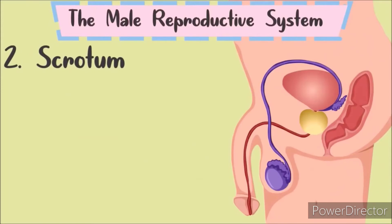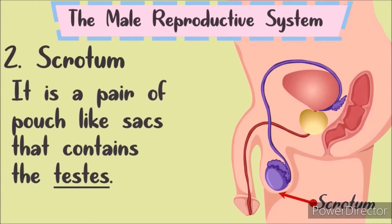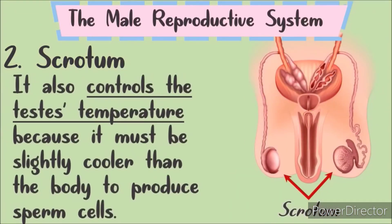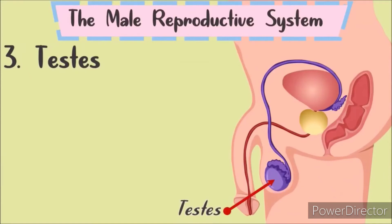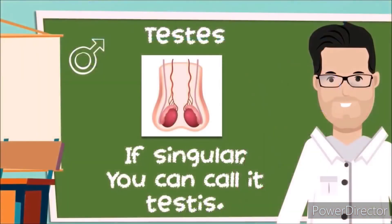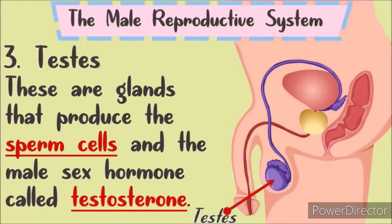Number 2: The Scrotum. It is a pouch-like sac that contains the testes. It also controls the testes' temperature because the testes must be slightly cooler than the body to produce sperm cells. Number 3: The Testes. These are the glands that produce sperm cells. The testes are also responsible for producing the male sex hormone called testosterone.